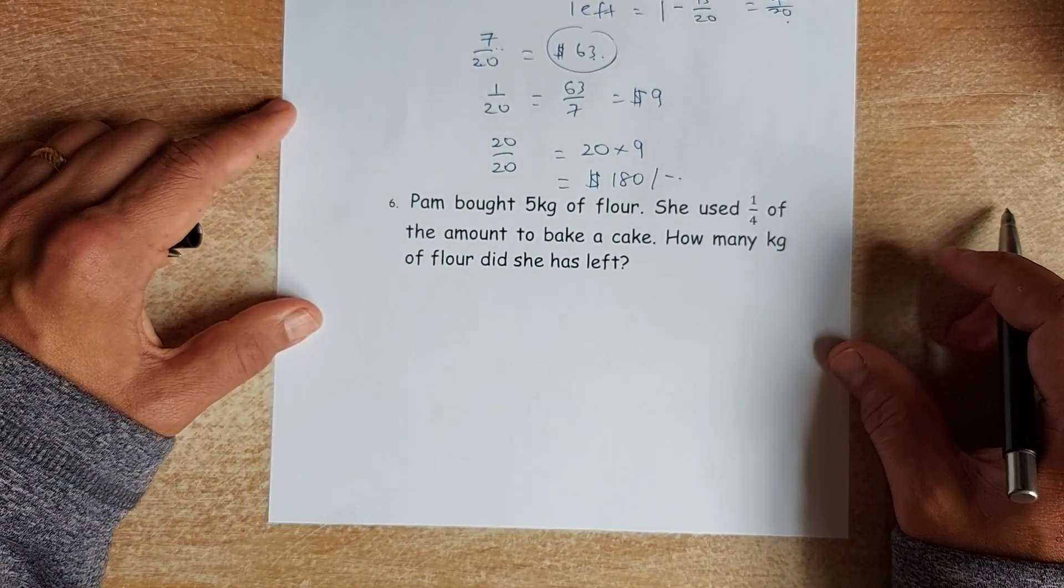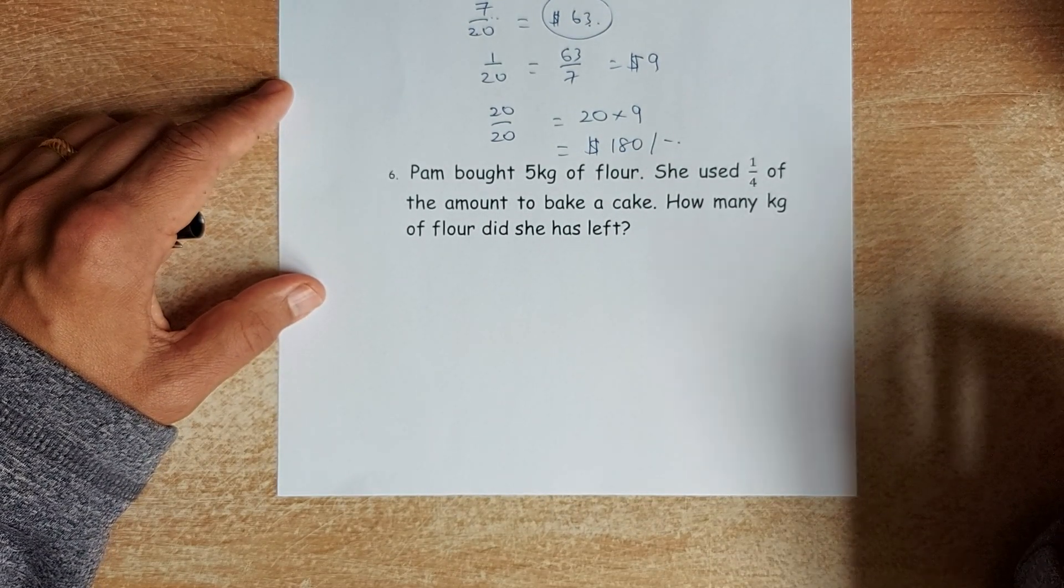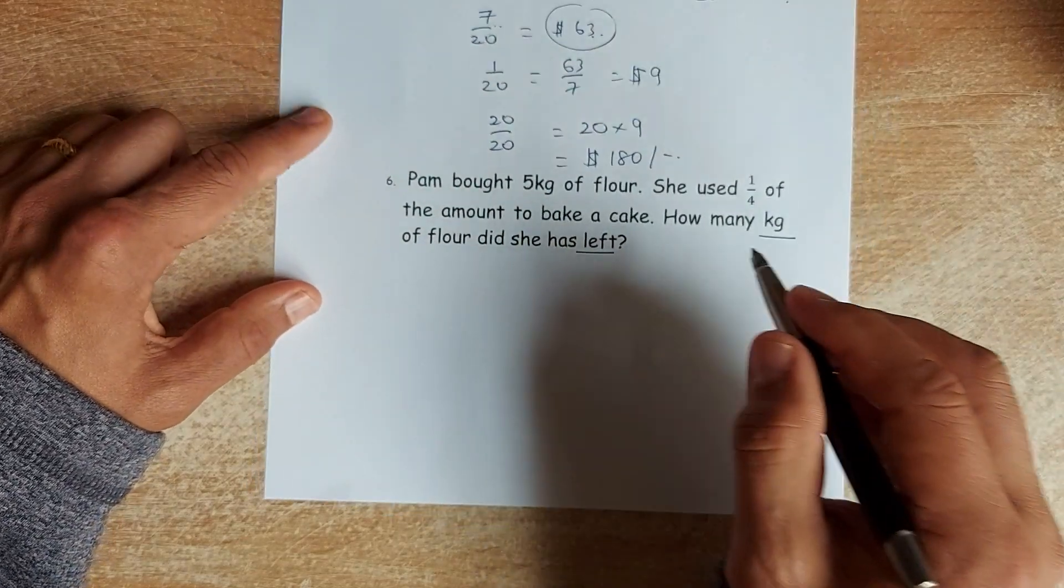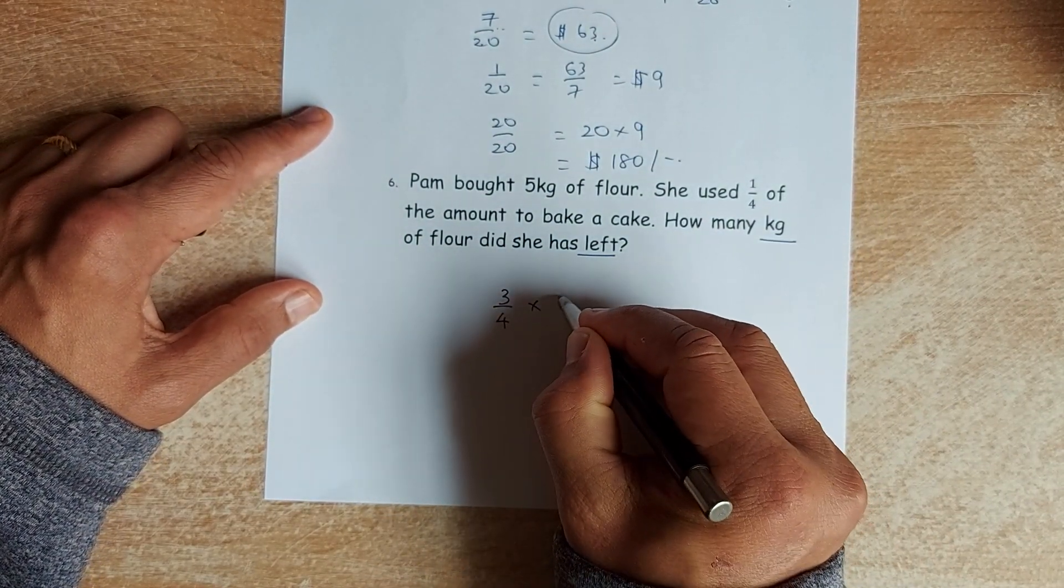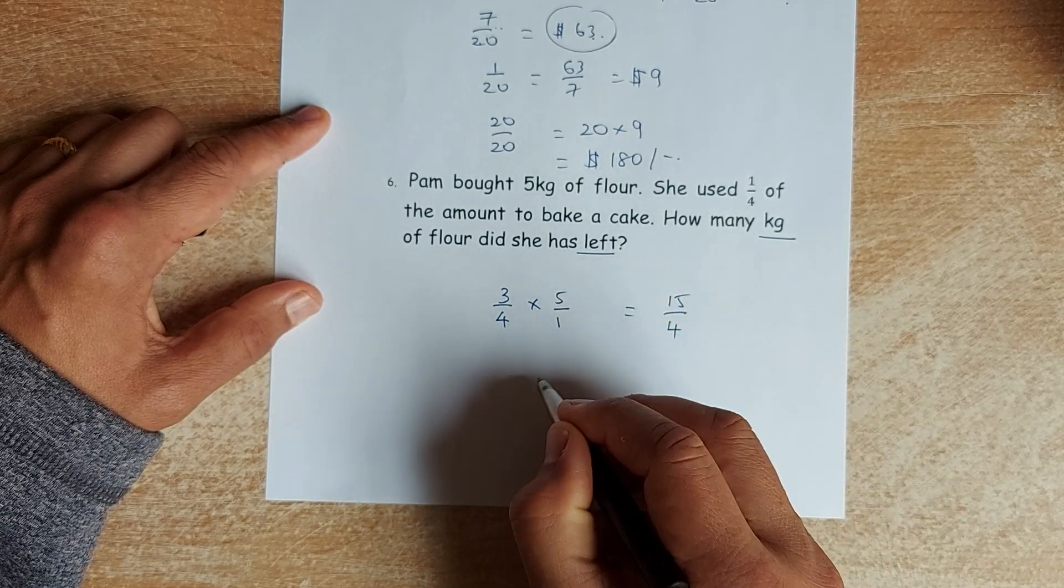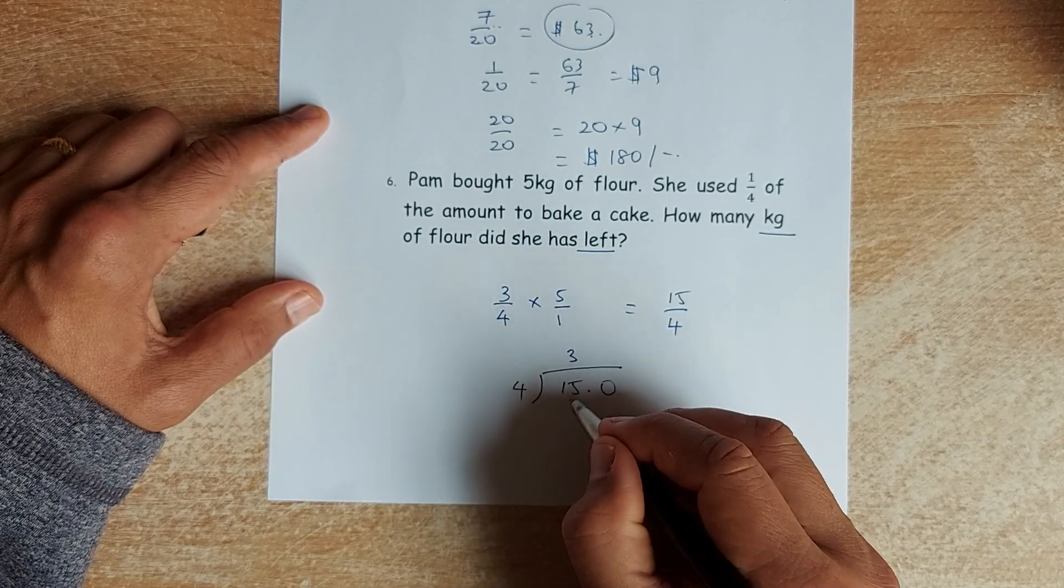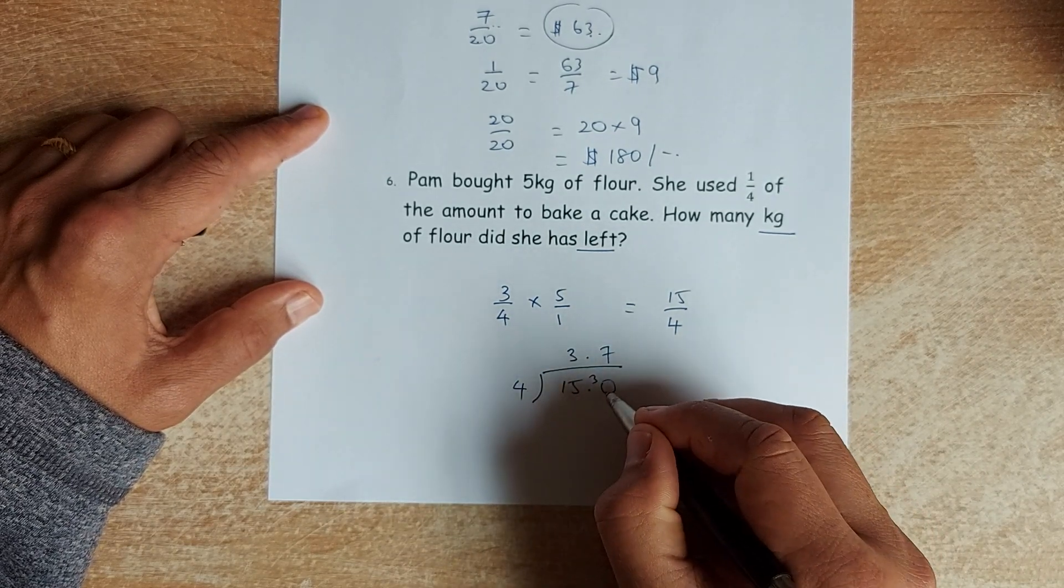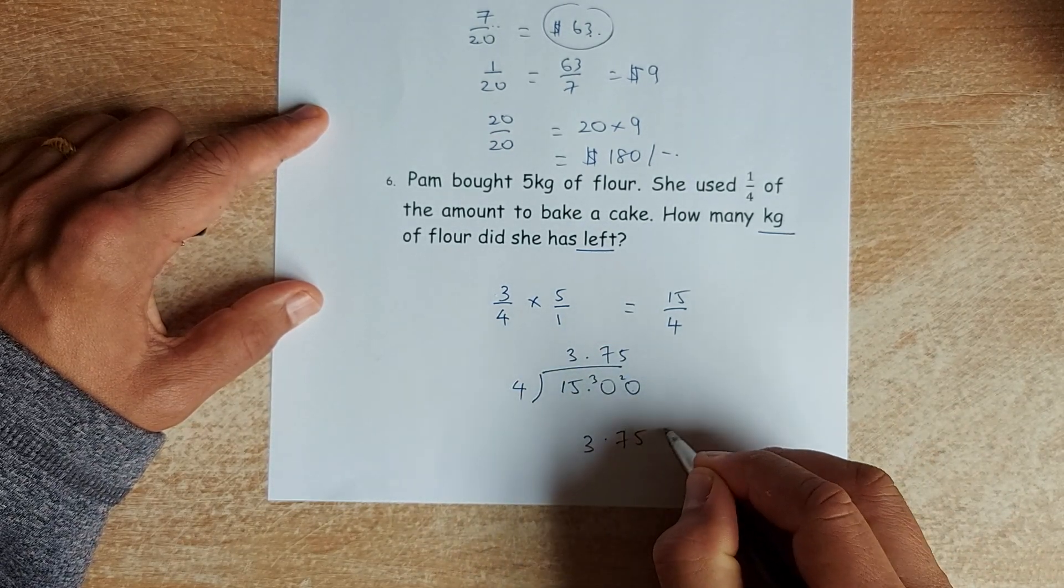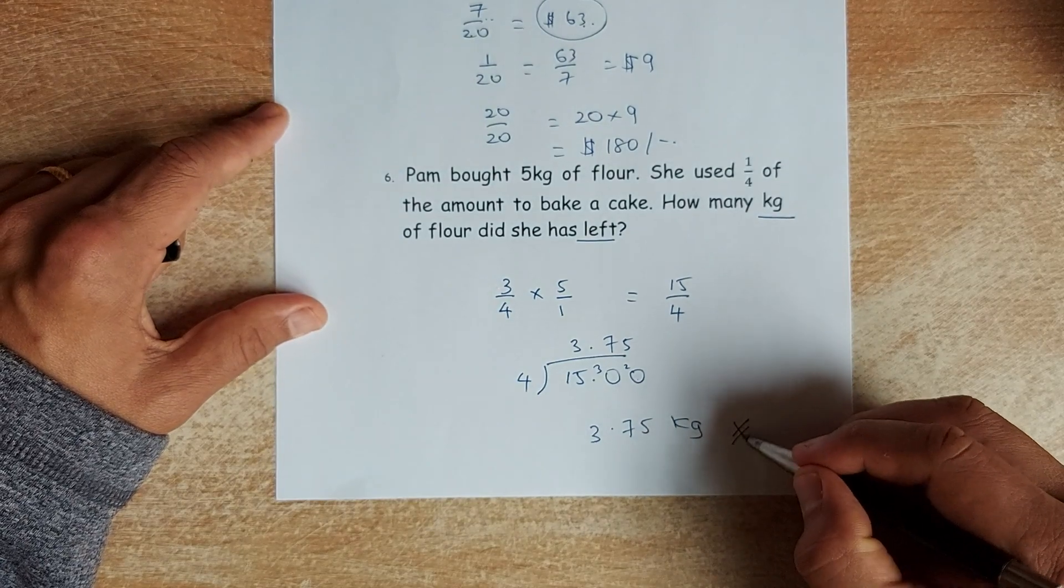Now, we do the last question on this page. Pam bought 5 kg of flour. She used 1 quarter. How many kg of flour has she left? So very simple. She has used 1 quarter. So she actually left with 3 quarter of 5 kg. Again, you multiply 3/4 times 5 over 1. 3 times 5 is 15 divided by 4. Use a short division. 15 divided by 4. You got 3 and then 3 times 4 is 12. Remainder 3. 30 divided by 4 is 7. 7 times 4 is 28. Remainder 2. 20 to 4 is 5. So he is left with 3.75 kg of flour.